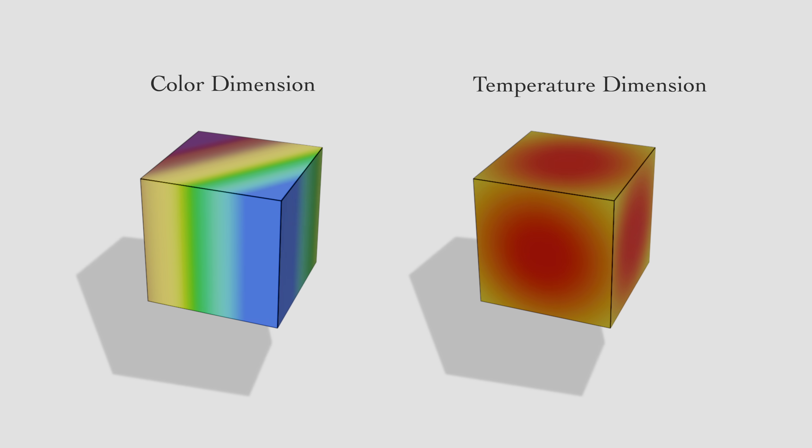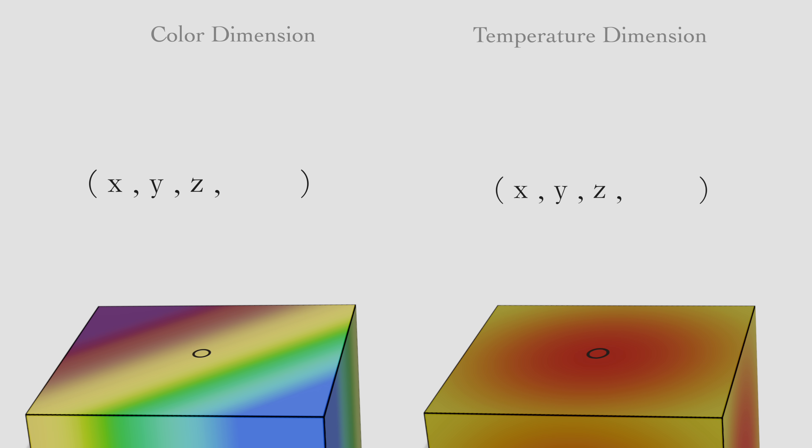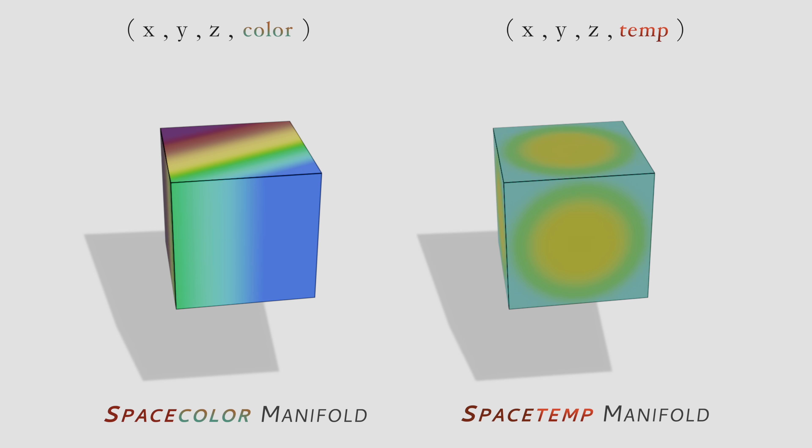That is, at any location in the cube, we can assign a fourth number domain spanning color or temperature values, which taken in conjunction with the three dimensions of the cube itself, forms a data structure meeting the definition of a four-dimensional manifold.